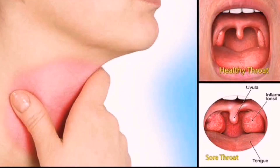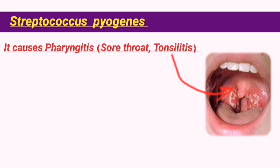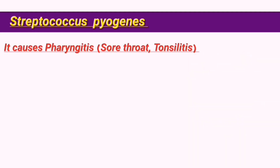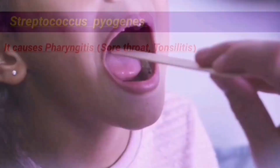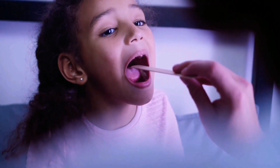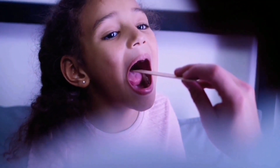One of the most common infections by S. pyogenes is inflammation of the tonsils or the larynx, known as tonsillitis and laryngitis respectively. These infections cause a sore throat, swelling, fever and difficulty in swallowing.